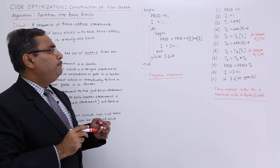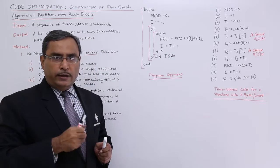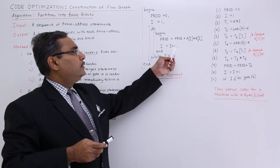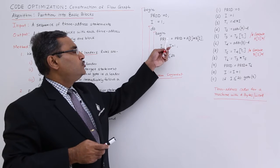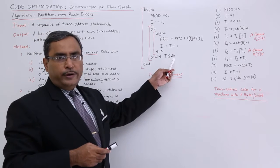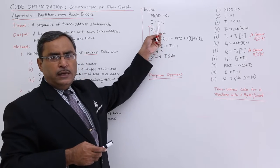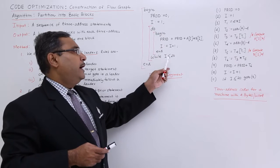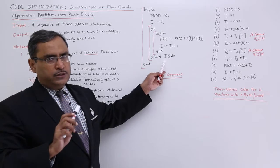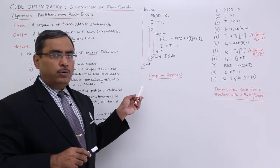We have: product equal to product plus a[i] times b[i], where i is a subscript of the a and b arrays, then i is equal to i plus 1, so i gets incremented. This loop executes while i is less than or equal to 20 — so it runs 20 times, since i starts at 1 and runs until i becomes 20.